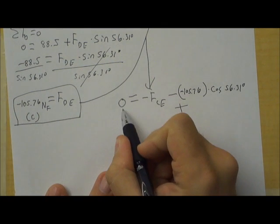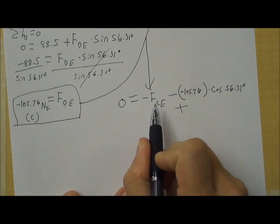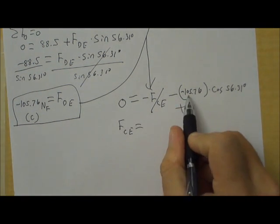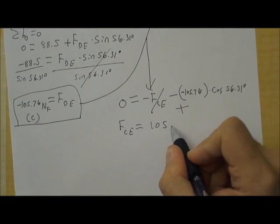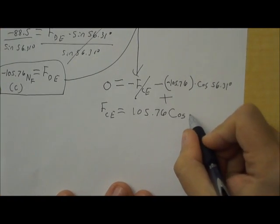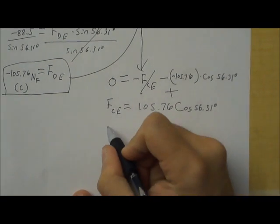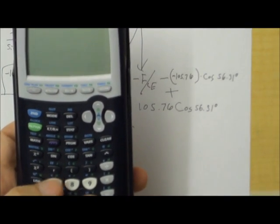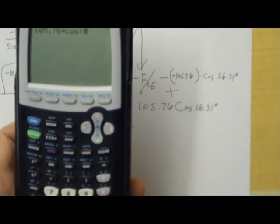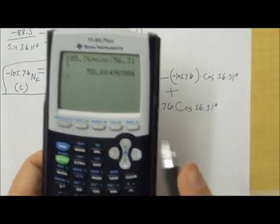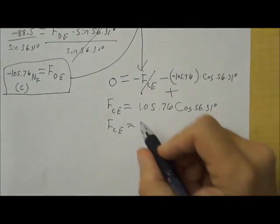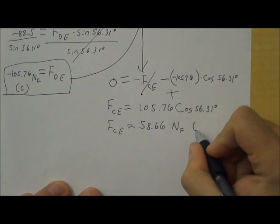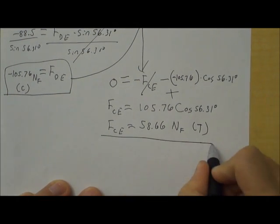Now, I am going to move this FCE over. Since that's what we're trying to find, it's negative. If I add it to both sides, it's going to cancel out here, and it'll be positive over on this side. So, FCE equals positive 105.76 cosine 56.31 degrees. So, I just need to type that in. 105.76 times cosine 56.31. And we get 58.66. And that is newtons of force, and since it's positive, we're talking about a tension force.